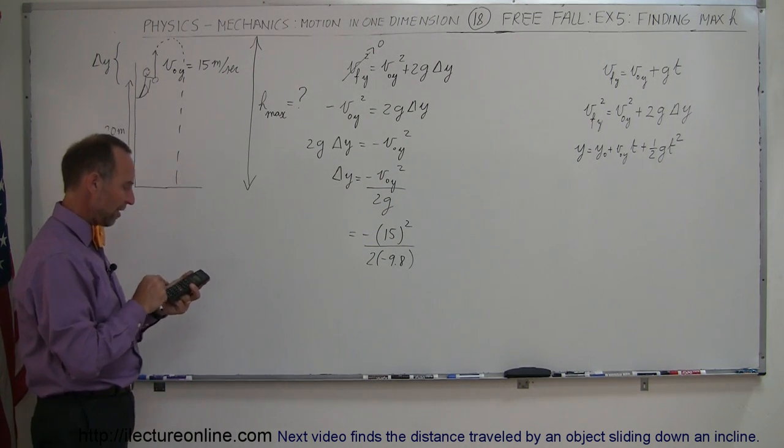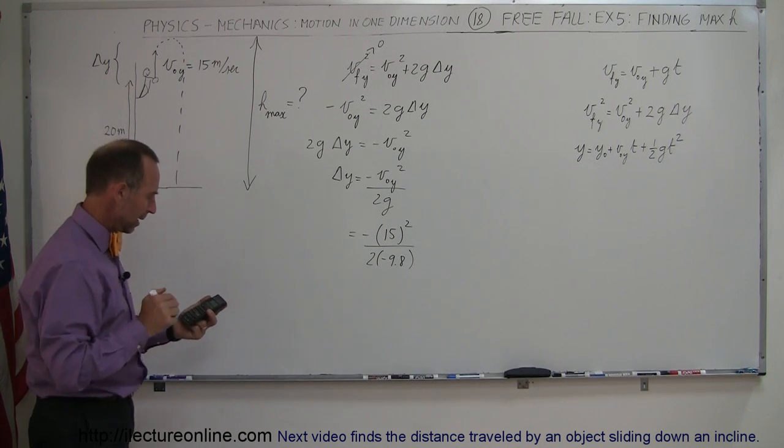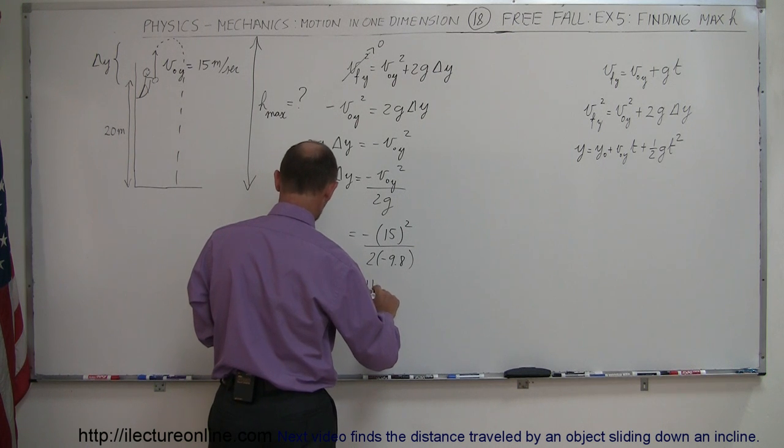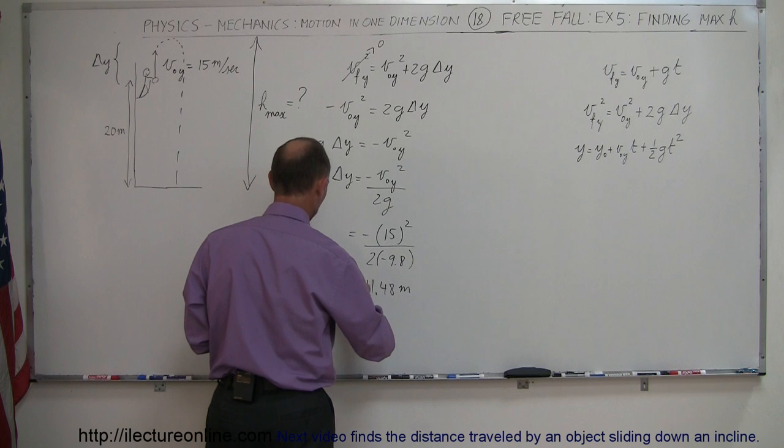With our calculator, we get 225 in the numerator divided by 2 divided by 9.8, and we get this is equal to 11.48 meters delta Y.